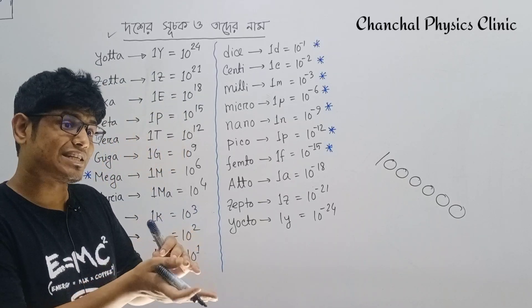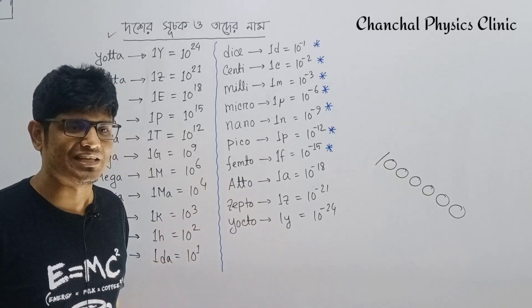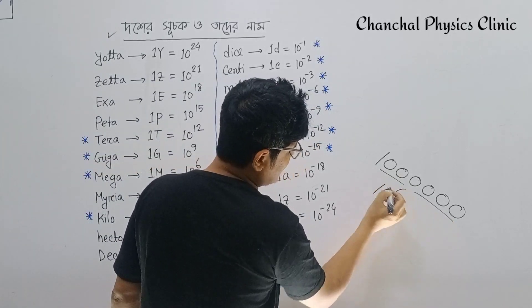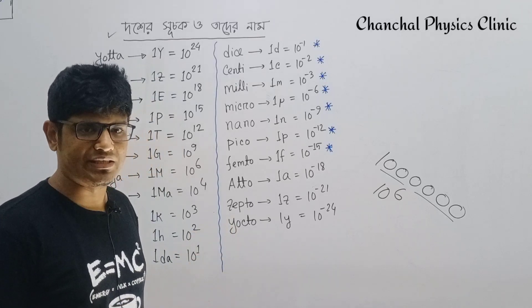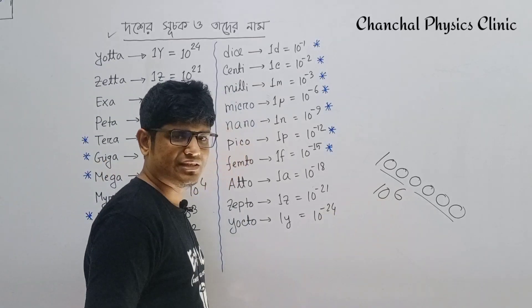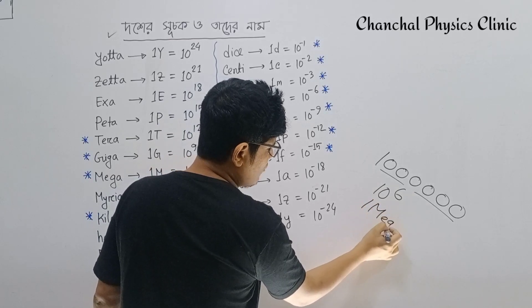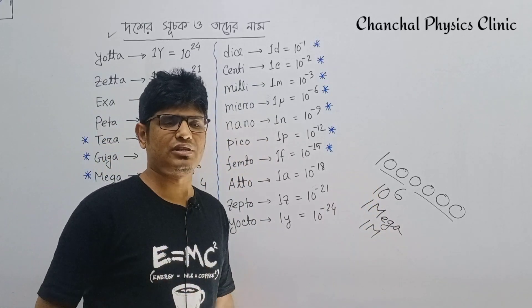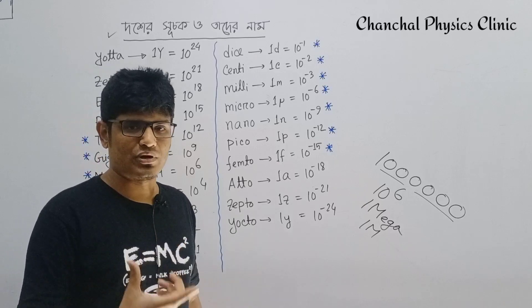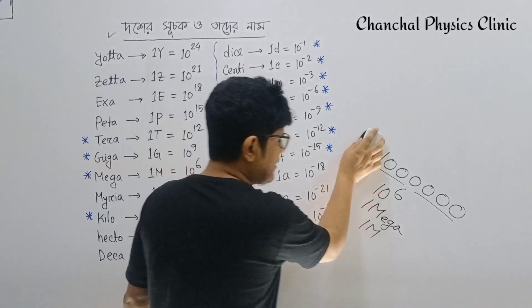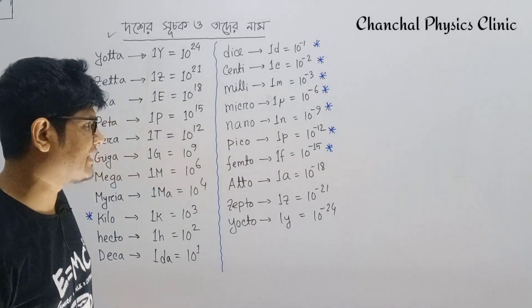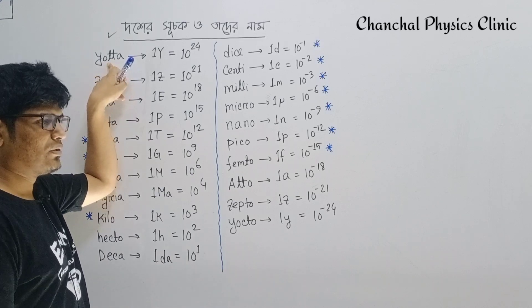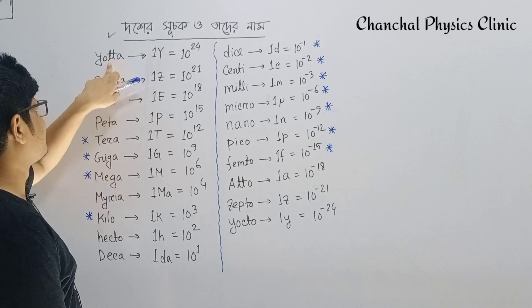What do I say about this? If I have 10 to the power 6, I will write 10 to the power 6. So 1 Mega equals 10 to the power 6.